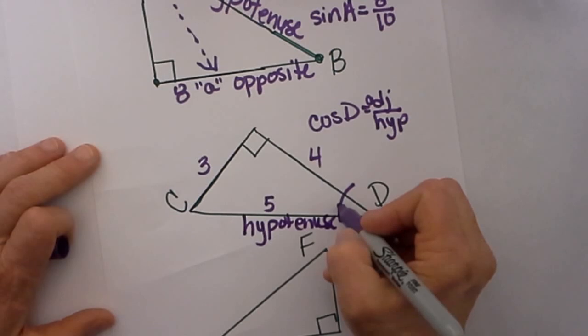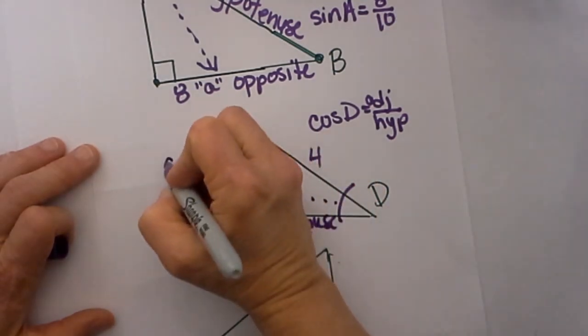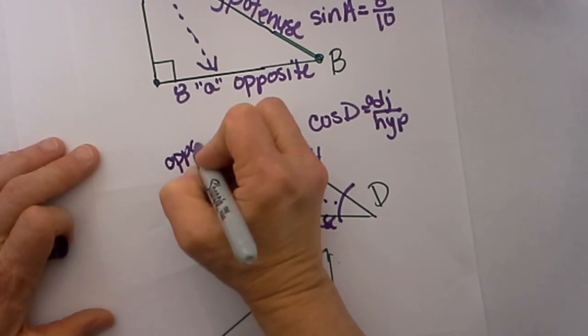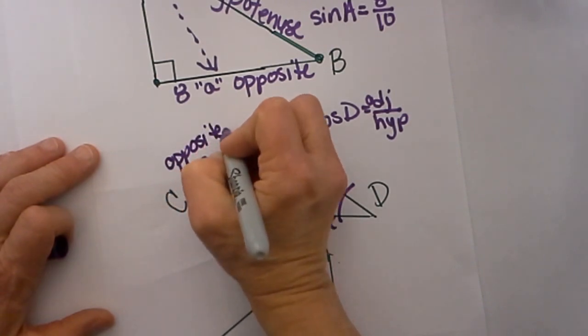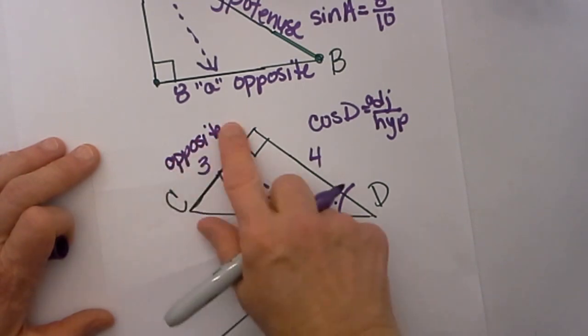Now from angle D the side that measures 3, that is my opposite side. And in cosine I don't need that side. I don't even need the side 3.